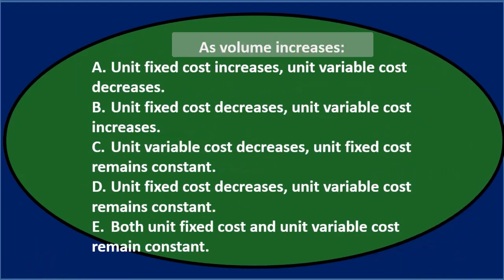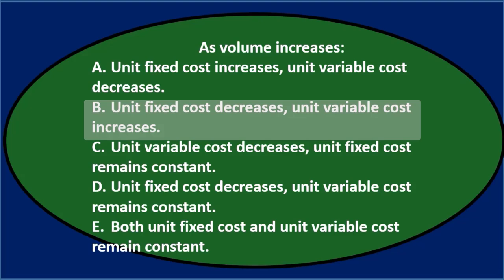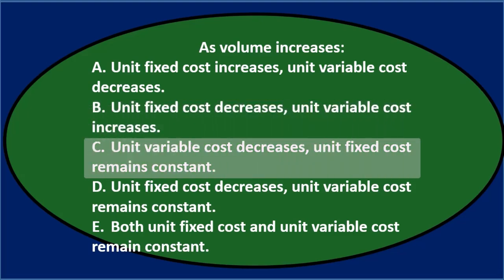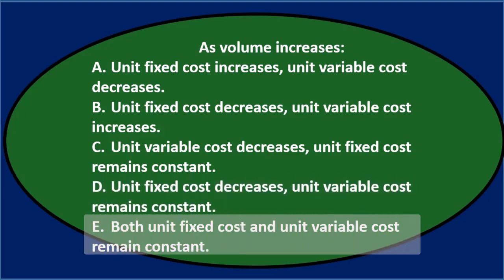Next question: As volume increases — A. unit fixed cost increases, unit variable cost decreases. B. unit fixed cost decreases, unit variable cost increases. C. unit variable cost decreases, unit fixed cost remains constant. D. unit fixed costs decrease, unit variable costs remain constant. Or E. both unit fixed cost and unit variable cost remain constant.